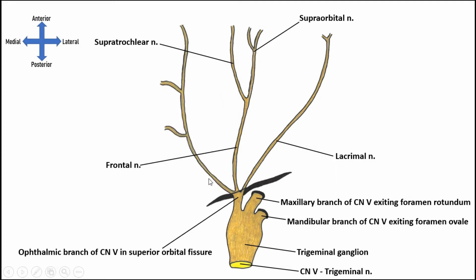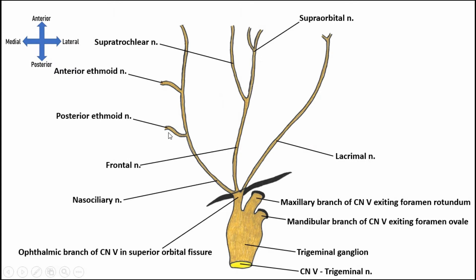The last big branch of the ophthalmic nerve is the nasociliary nerve. The major branches we can see here are the posterior and anterior ethmoidal nerves, which supply sensation to the upper portion of the nasal cavity as well as the ethmoid air cells. This nerve terminates as the infratrochlear nerve, conveying sensation from a small patch of skin on the medial inferior aspect of the orbit — the lower eyelid and a small patch near the nose.